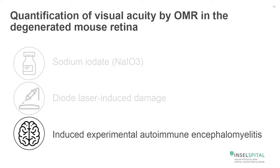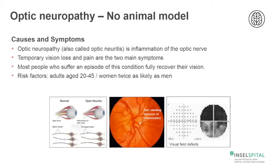In the last part of my talk, I would like to give you some information about a model of multiple sclerosis, which we are going to use also for optic neuropathy, because for the disease optic neuropathy there is no animal model available. Optic neuropathy is also called optic neuritis, and it is characterized by inflammation of the optic nerve.